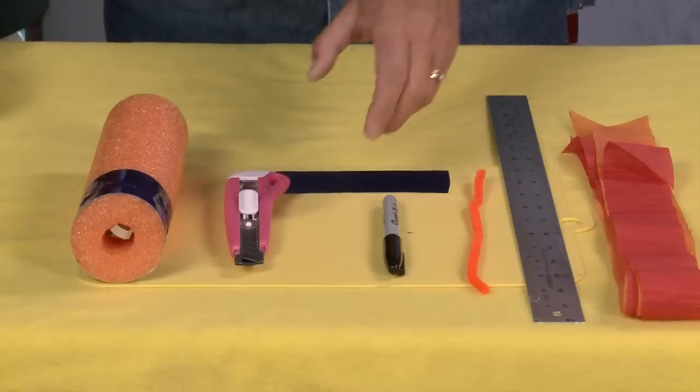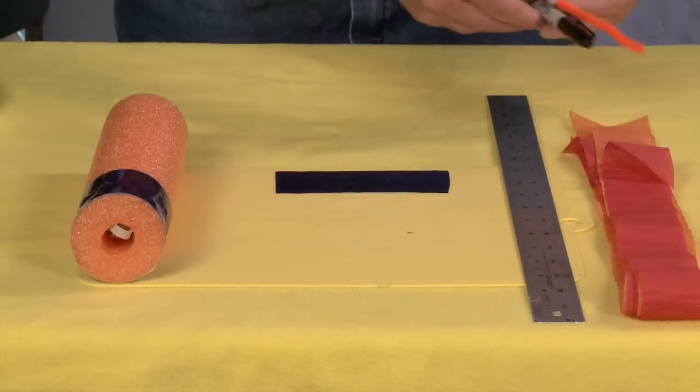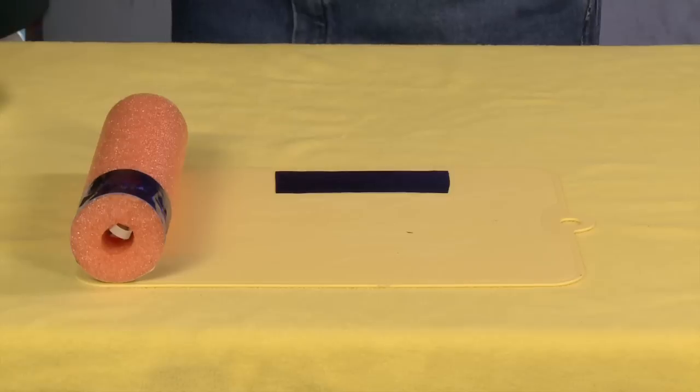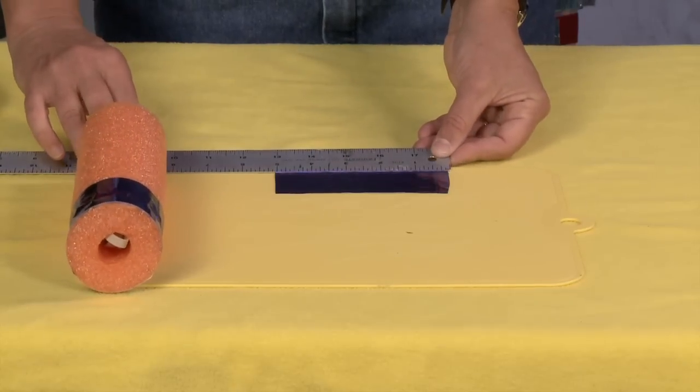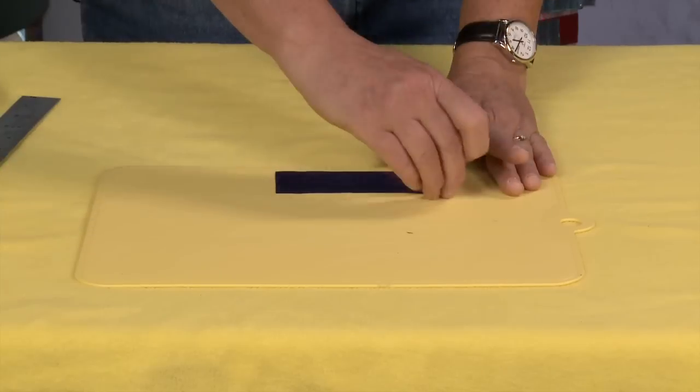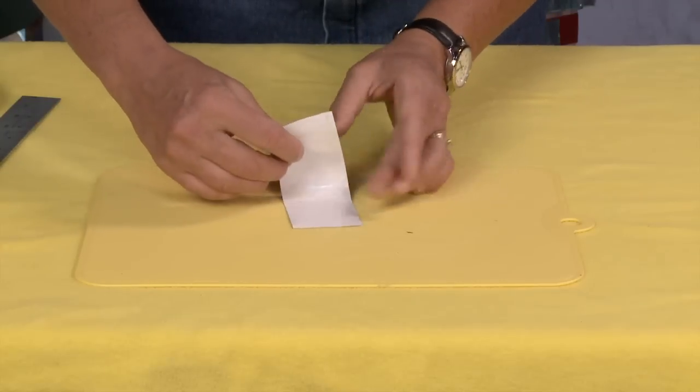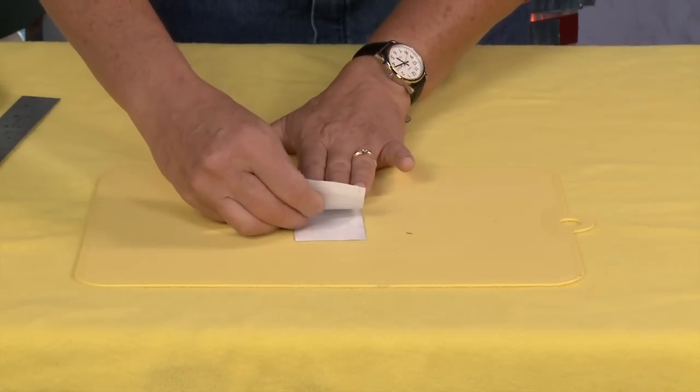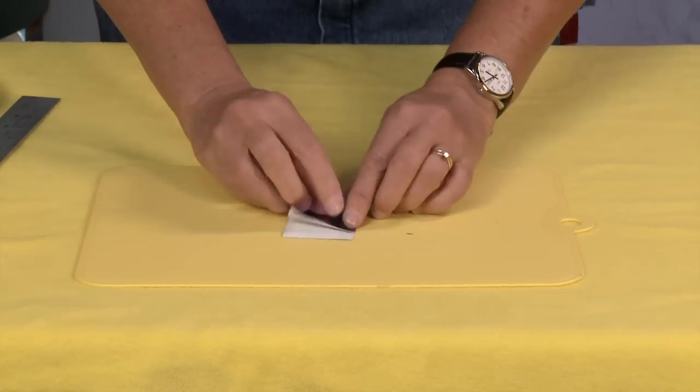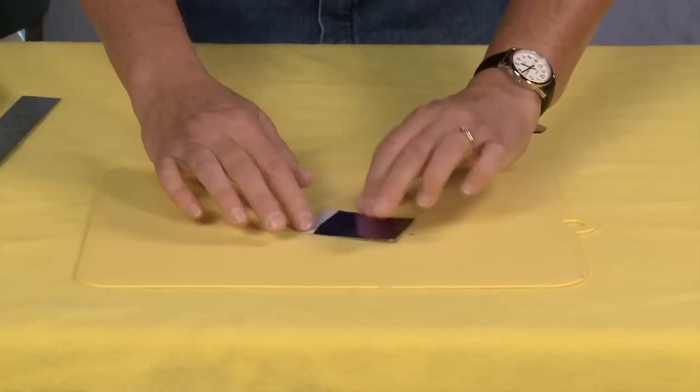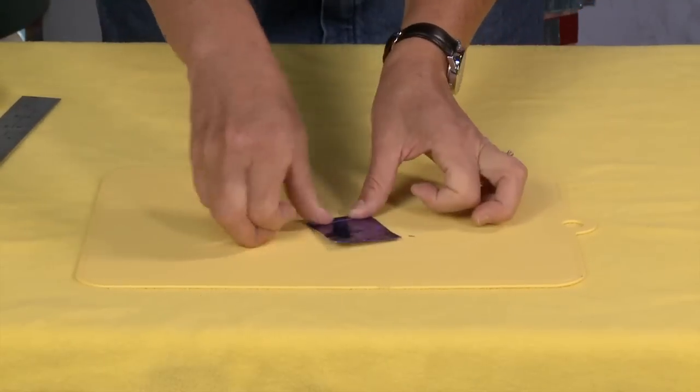So the first thing that you're gonna do is add your fins. To add the fins you're just gonna take a five inch strip of tape. As you can see I've got a five inch strip of tape here. Pick it up and fold it over onto itself and seal it off.